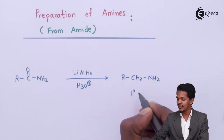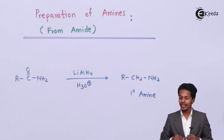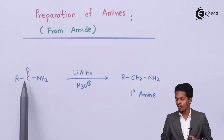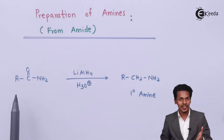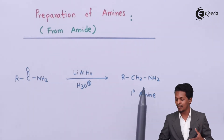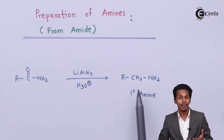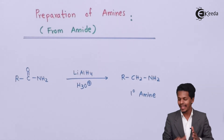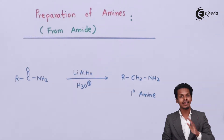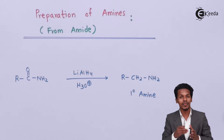So this is how we can prepare a primary amine. Importantly, the carbon atom does not degrade — the total number of carbon atoms present in the amide remains the same in the amine product. That's why this is a very good method: the total number of carbon atoms does not decrease, and the molecular mass does not change in terms of the carbon count.